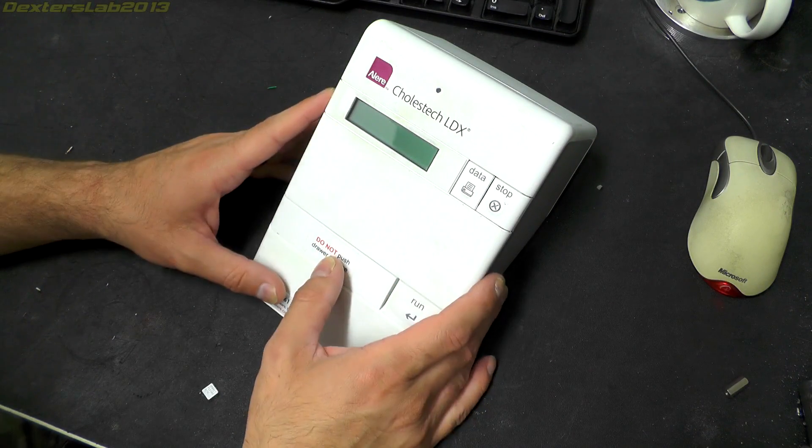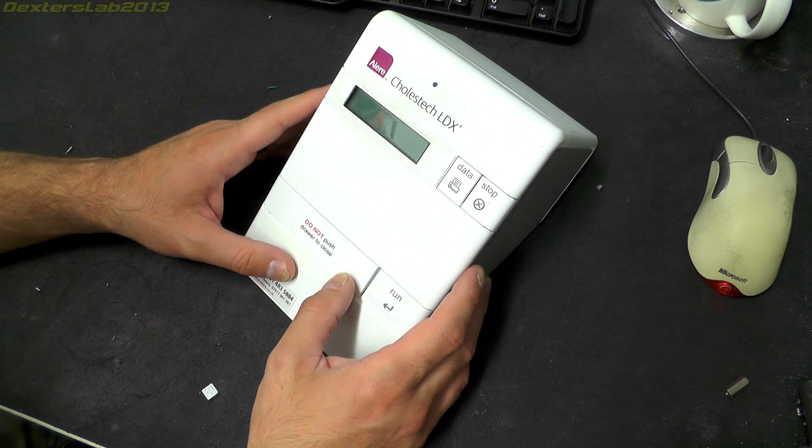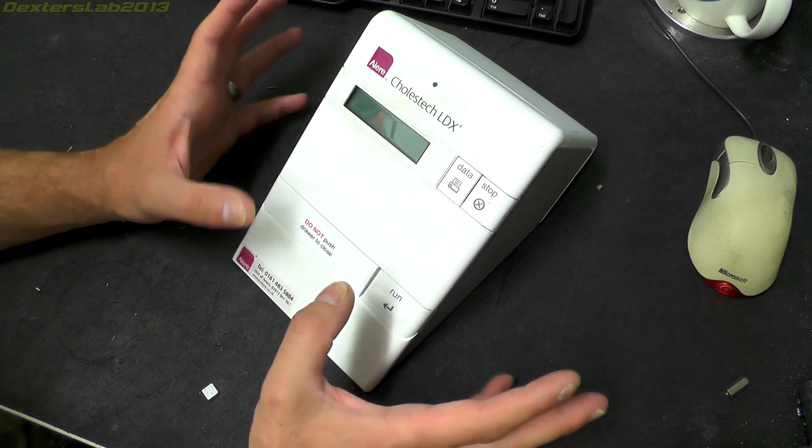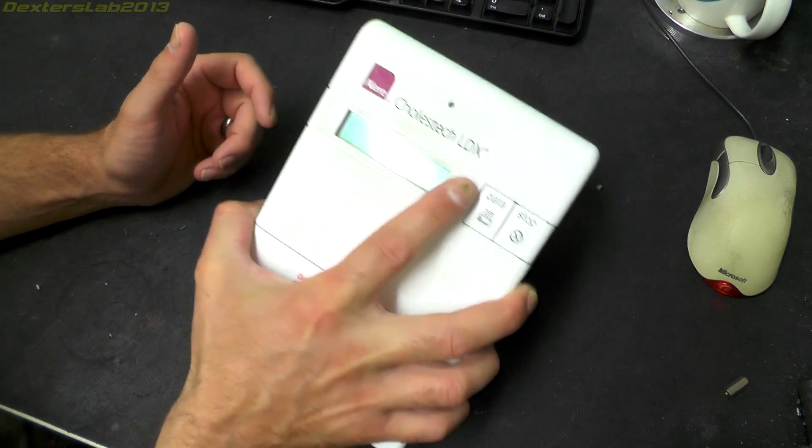Hello viewers, time for another teardown. After the humongous CR500 Kodak reader that I took apart last time, I decided to go for something a little lighter. This certainly weighs less than a kilo.